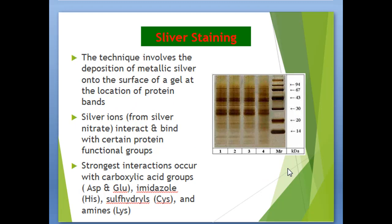Another technique for staining is silver staining. This technique involves the deposition of metallic silver onto the surface of the gel at the location of protein bands. Silver ions interact and bind with certain protein functional groups, and the strongest interaction occurs with the carboxylic acid groups.